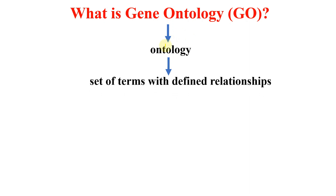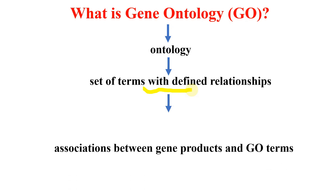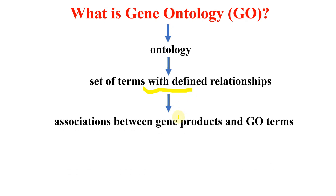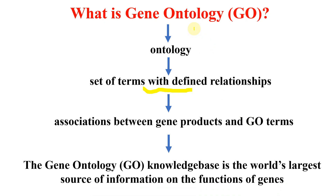Ontology is actually the set of terms with defined relationships. So then what would be gene ontology? The association between gene products and GO terms would be called gene ontology. The gene ontology knowledge base is the world's largest source of information on the function of genes. Gene ontology is actually a database — let me show you that website.